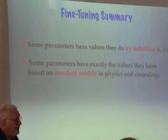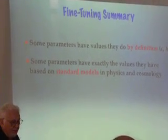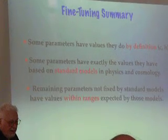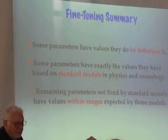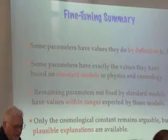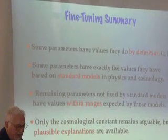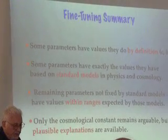Some parameters have exactly the values that they should have, the ones that I talked about in the standard model. Remaining parameters are fixed by the standard model or have values within ranges expected by these models. And only the cosmological constant remains arguable. Well, as I've shown you, plausible explanations are available.